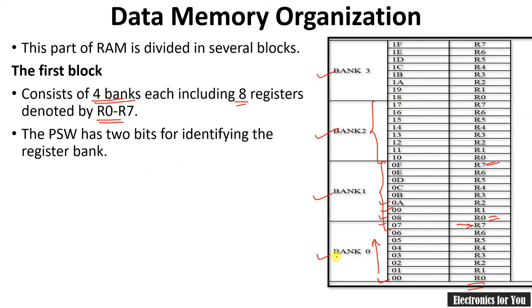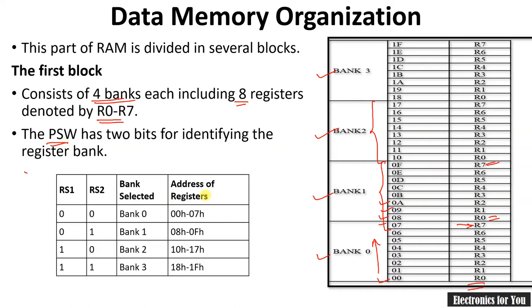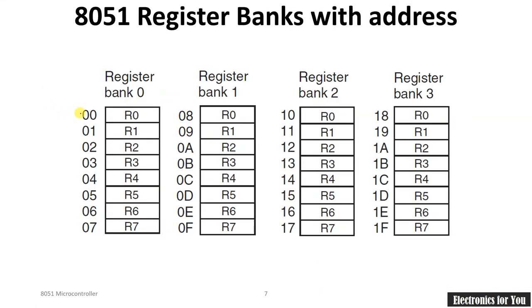These register banks can be selected using two bits of the PSW — Program Status Word — register, specifically RS1 and RS0. If RS1:RS0 = 00, Bank 0 is selected with addresses 00h to 07h. For 01, Bank 1 is selected; for 10, Bank 2; and for 11, Bank 3 is selected with addresses 18h to 1Fh.